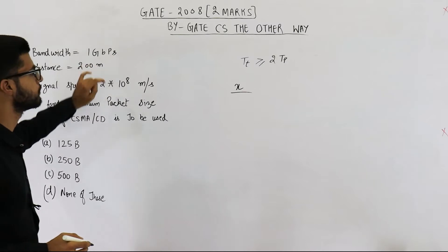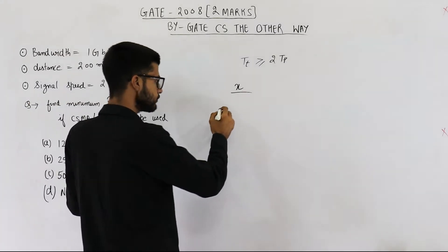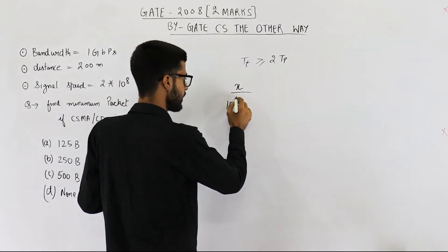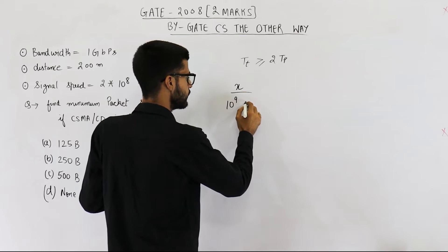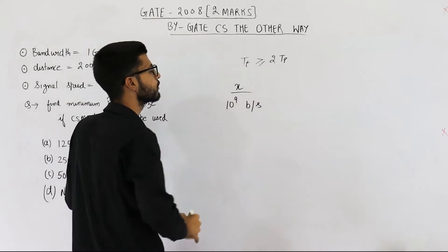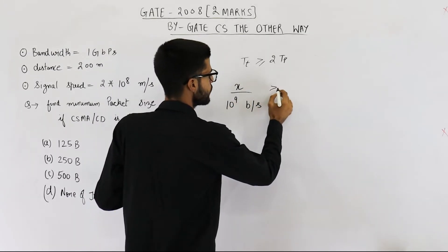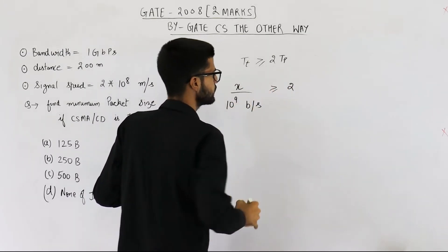Bandwidth is 1 Gbps. G can be written as 10 raised to the power 9. So 1 Gbps. This is greater than or equal to twice of propagation delay.